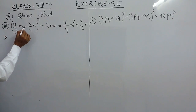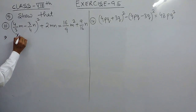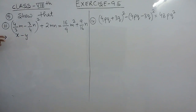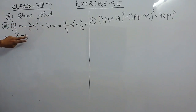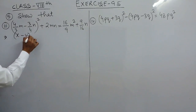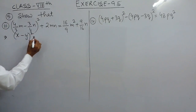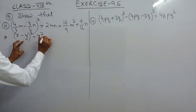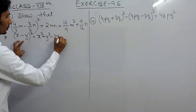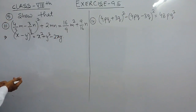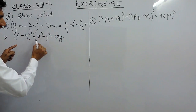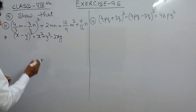If I consider this complete term as x and this complete term as y — I am considering 4 upon 3m as x and 3 upon 4n as y. This will become a whole square, and we know that if I am going to expand this, it is equal to x square plus y square minus 2xy. First of all, I am solving for the left hand side and making it equal to the right hand side.